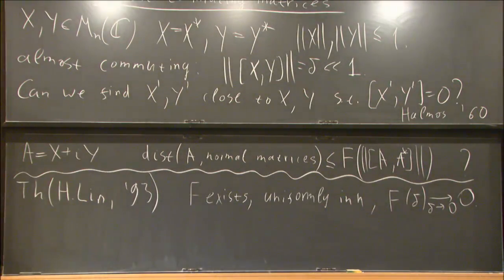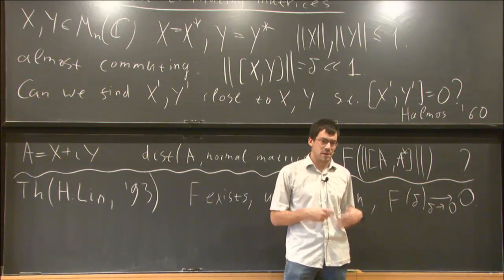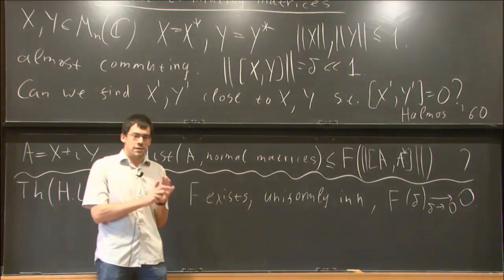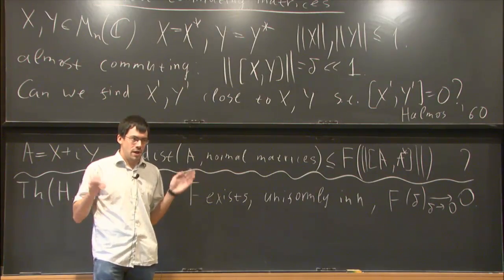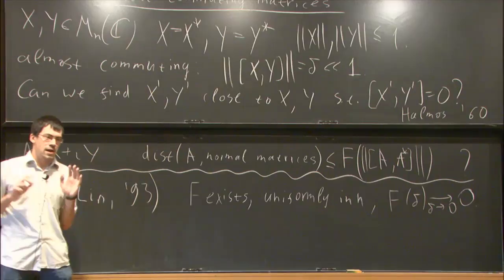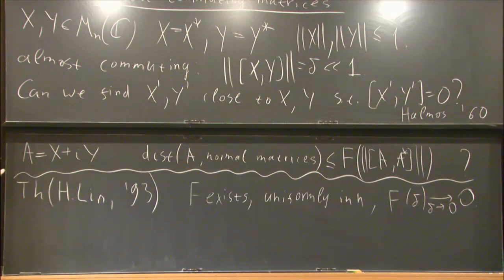The interesting thing about this theorem is that it doesn't give you any information about how fast this f goes to zero. It's a purely existence type statement and the proof basically goes by contradiction. If this doesn't exist then you can find a sequence of matrices such that the estimate becomes worse and worse, then you consider this sequence as an element of some C* algebra of sequences and work in the C* algebra.